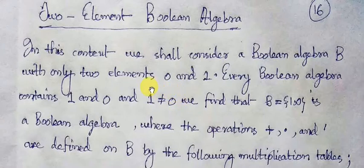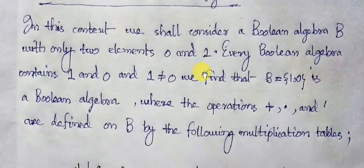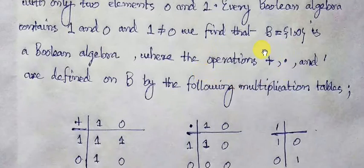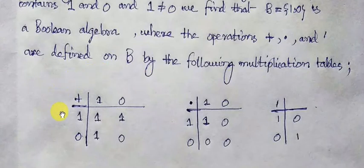So, what we are doing? We are considering the non-empty set B forming the Boolean algebra consisting of two members: one is the additive identity element and another is the multiplicative identity element. Here, we are defining addition and multiplication as binary operations, and complementation as a unary operation, in the following three tables.